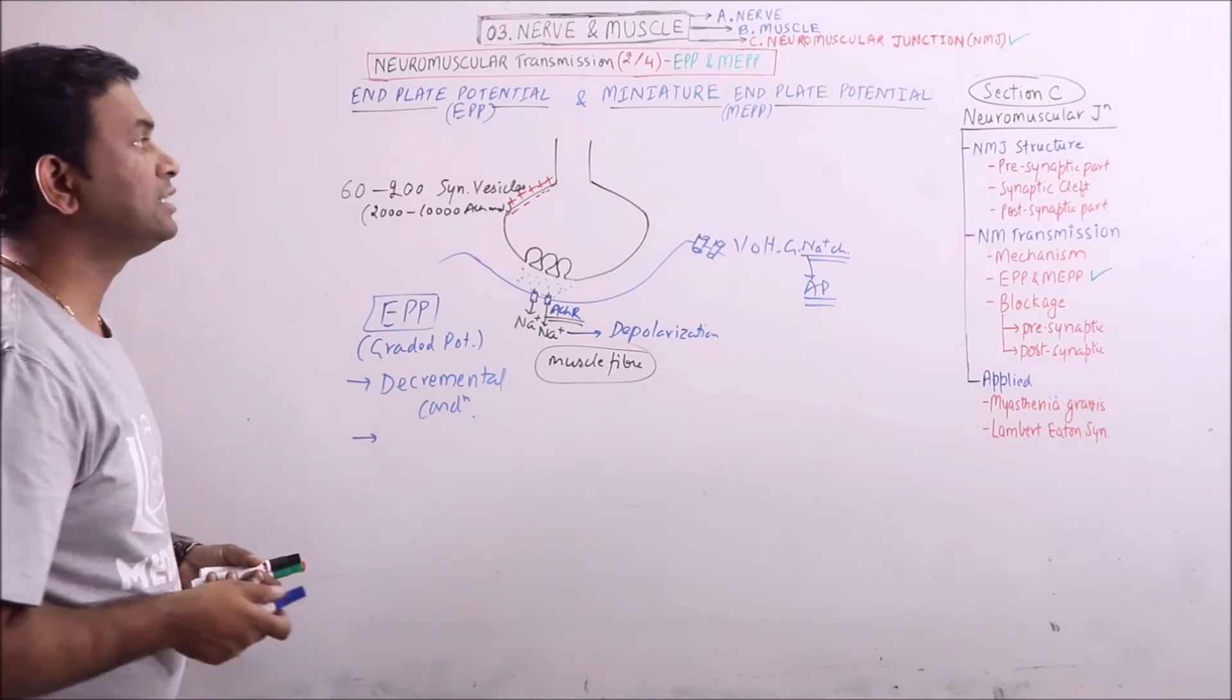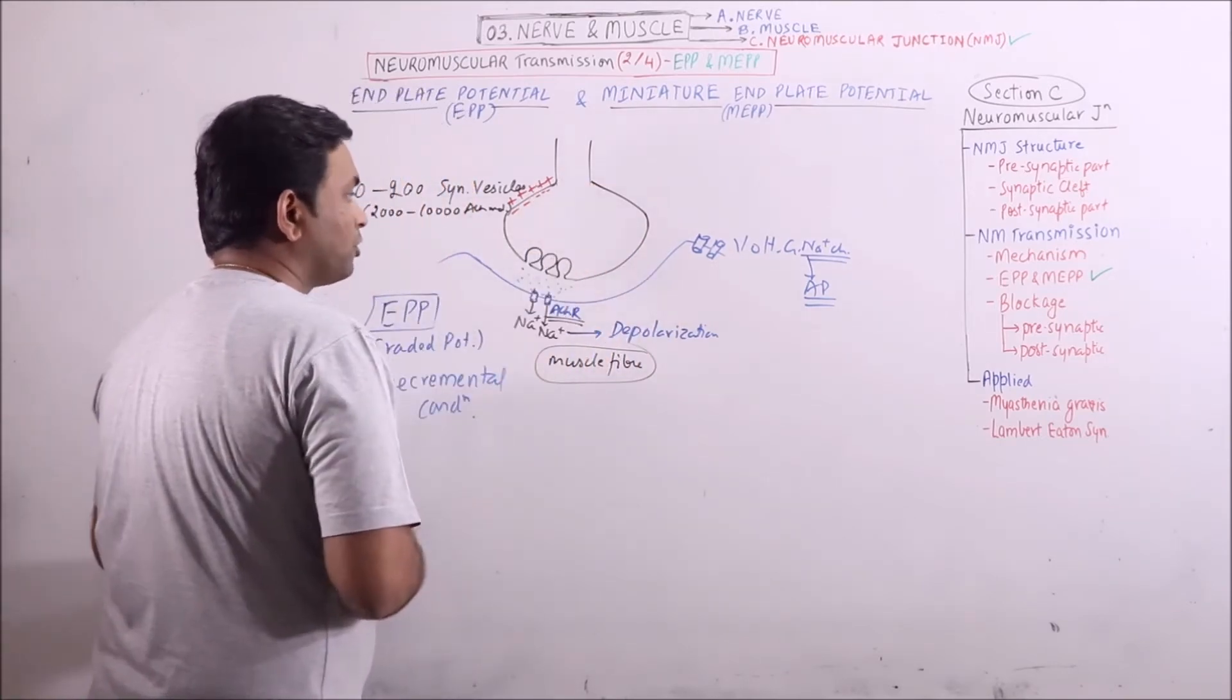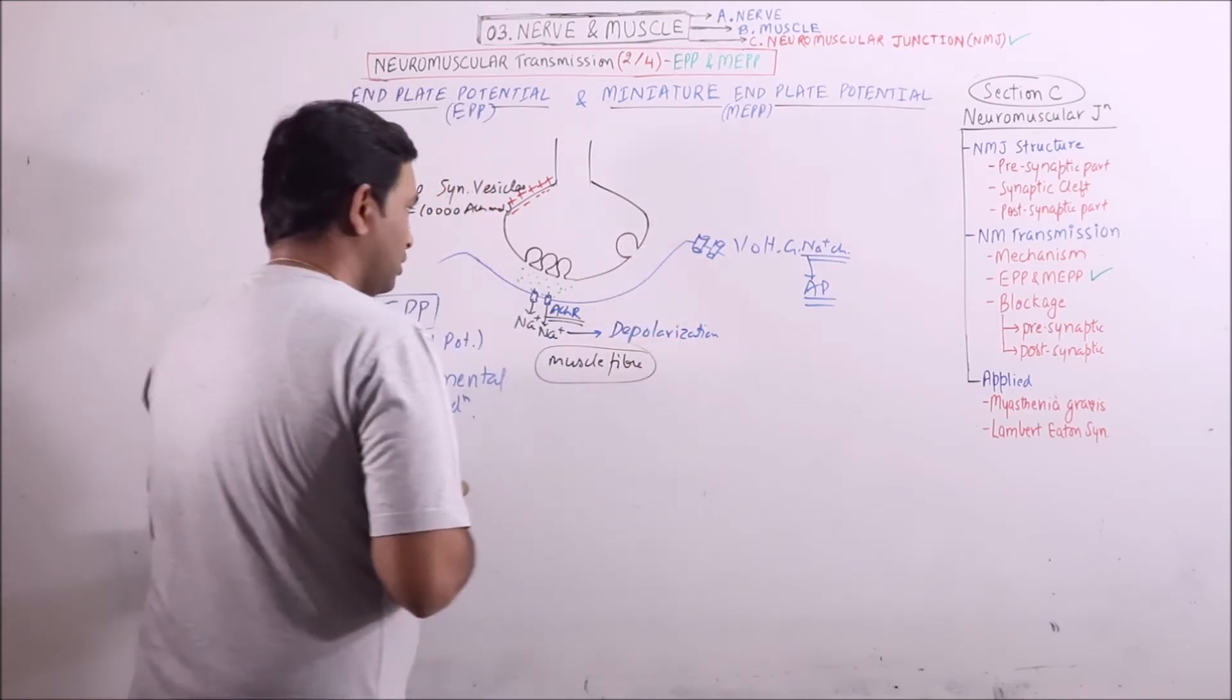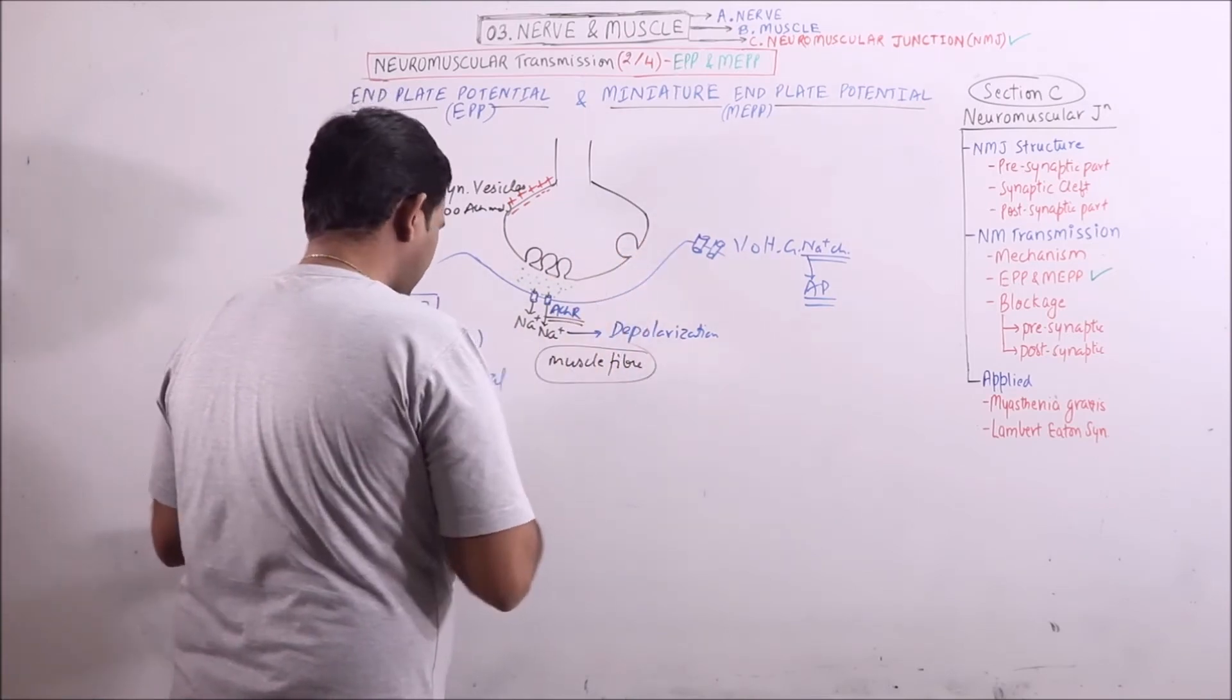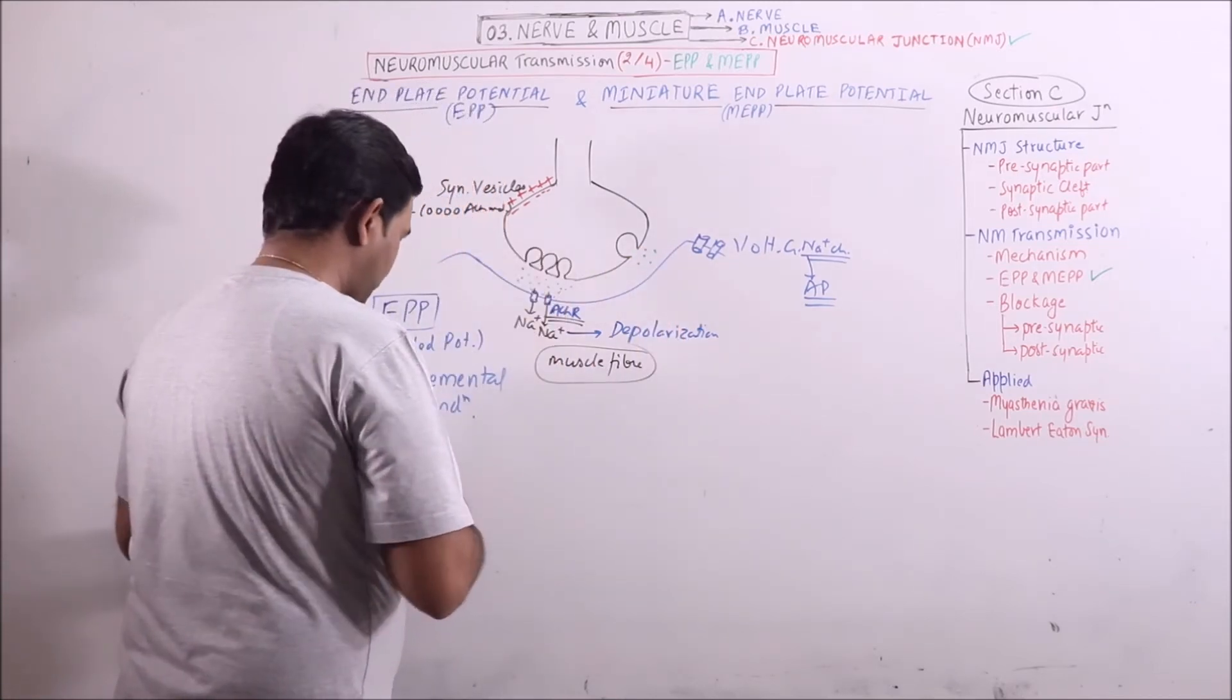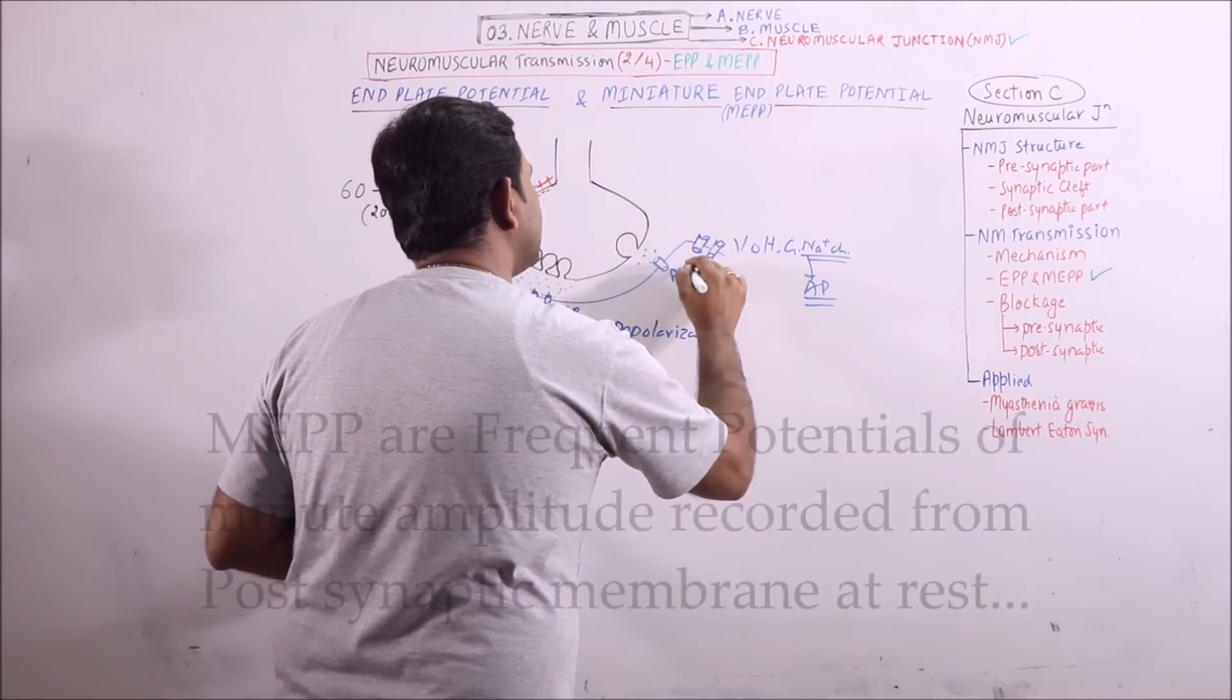Now, what is miniature end plate potential? Even when the neuromuscular junction is at rest or the motor neuron is at rest, vesicles continue to fuse with the axonal membrane and release the neurotransmitter. Usually one vesicle fuses and this will also involve some acetylcholine receptors.